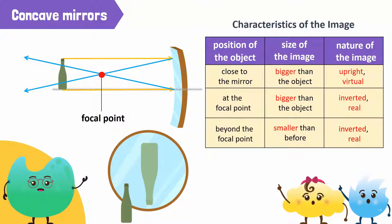If the object is placed before the focal point, its image appears upright. And when the object is placed at or beyond the focal point, an inverted image is formed.